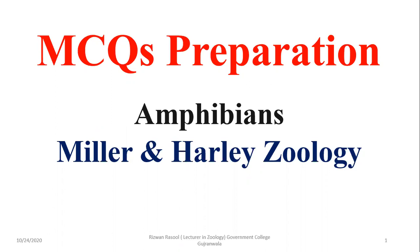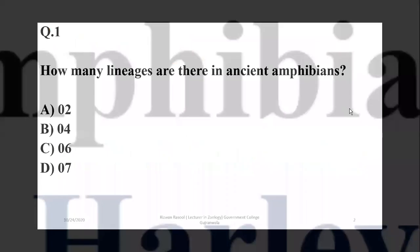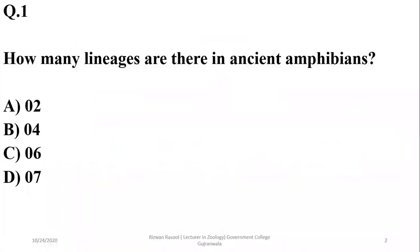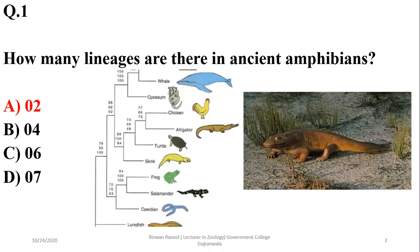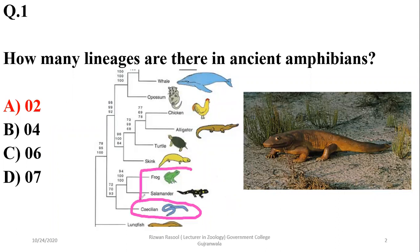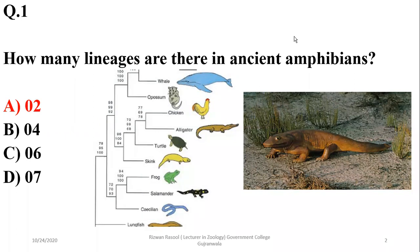Question number one explains how many lineages there are in ancient amphibians. As far as the ancient group of amphibians is concerned, there are two main lineages. One lineage is related to the Gymnophiona, or caecilians, and the other lineage is from which salamanders and frogs are derived.